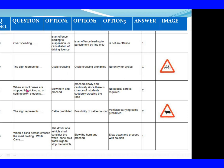Question 111: When school buses are stopped for picking up or setting down students. Option 1: Blow horn and proceed. Option 2: Proceed slowly and cautiously, since there is a chance of students suddenly crossing the road. Option 3: No special care is required. The right answer is Option 2: Proceed slowly and cautiously. Question 112: The sign represents. Option 1: Cattle prohibited. Option 2: Possibility of cattle on road. Option 3: Vehicles carrying cattle prohibited. The right answer is Option 2: Possibility of cattle on road.